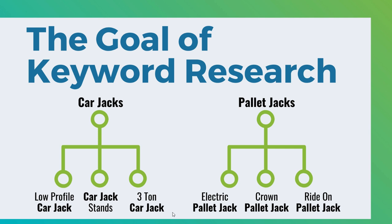For example, someone looking for a three ton car jack — I want to create a page exactly set up for that person. Someone looking for a ride-on pallet jack — I want to set up a page exactly like that so people can find the products they're looking for. I'm going to link all these different pages to this main page, which will have a ton of content on it and link out to all these different subcategory pages.